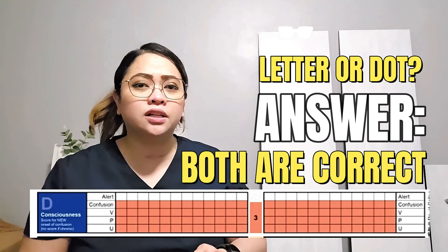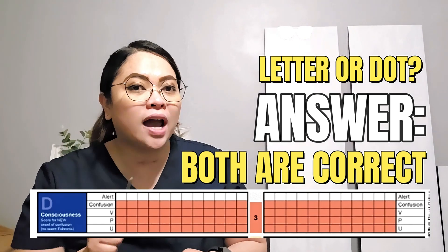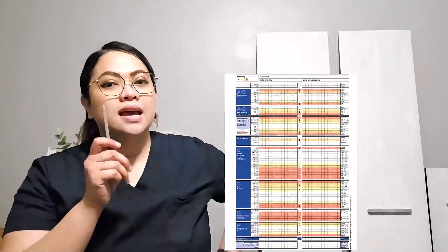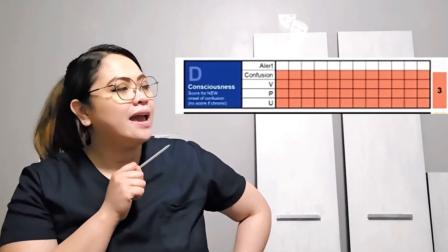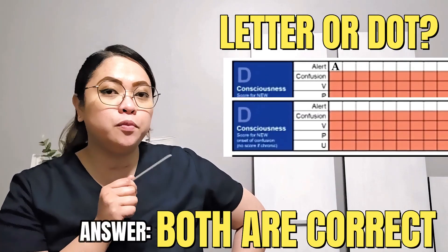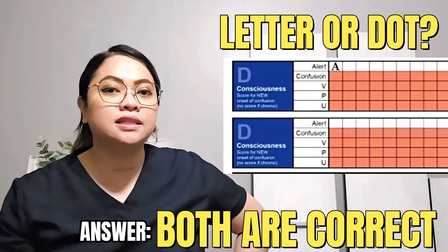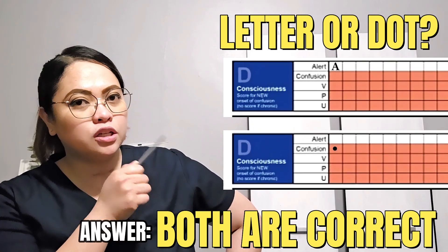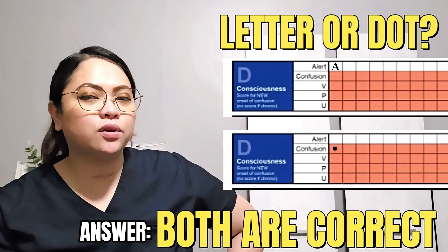Or you can simply put a dot — it doesn't matter, as long as you write your answer in the corresponding box. Look at the screen: if it's alert, you can put a dot here or A. And if your patient is confused, then you can put a dot on the C, right on the corresponding box right over here.